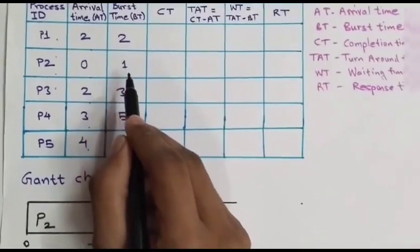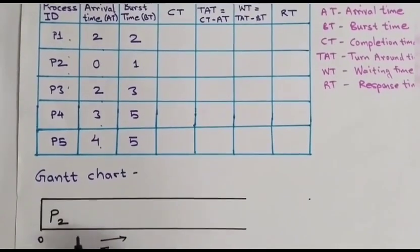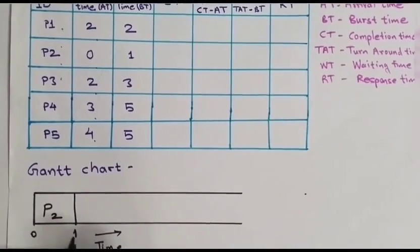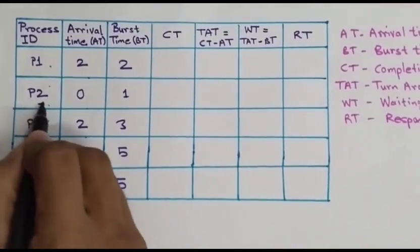Check out the burst time. That is only 1 unit. So for 1 unit CPU allocated to P2. Now P2 terminates.